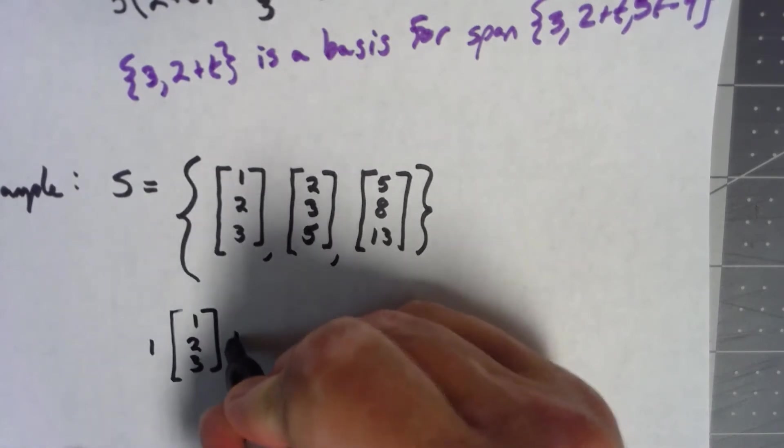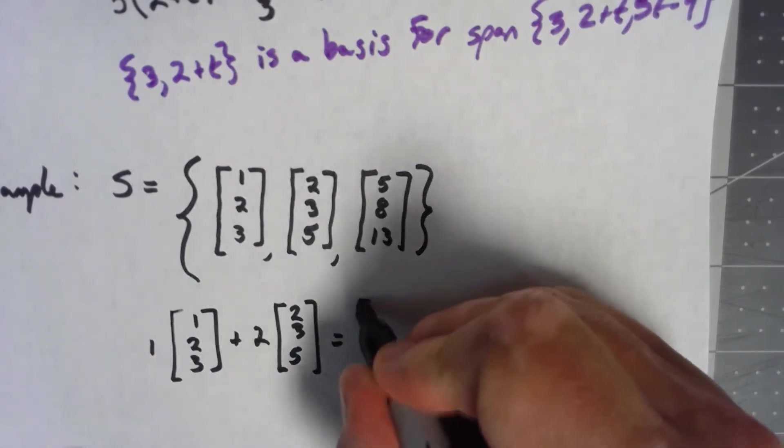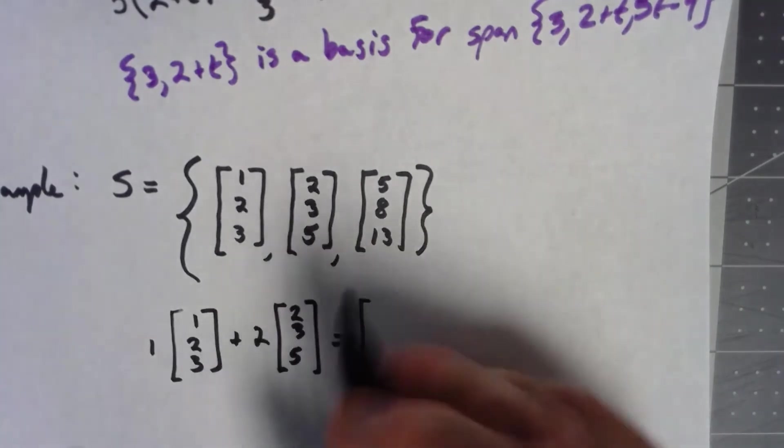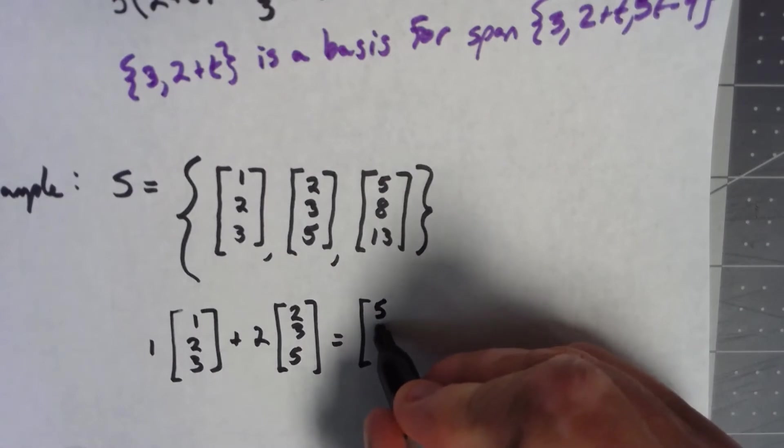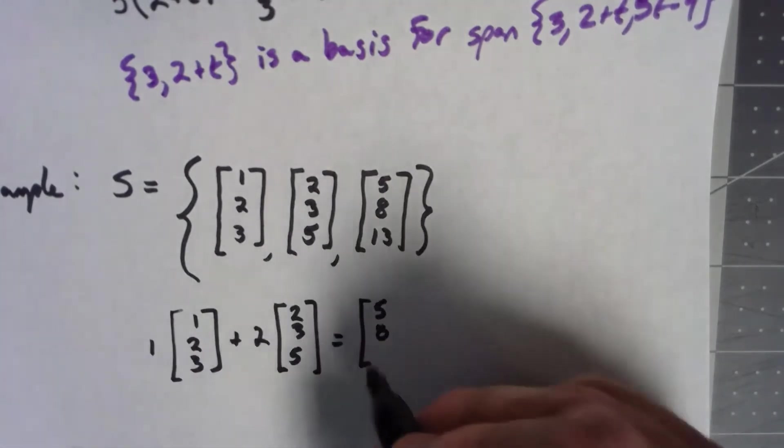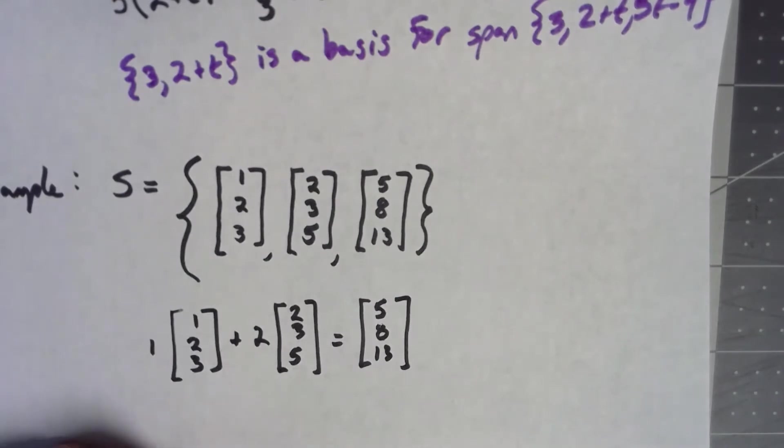If I do 1 times (1, 2, 3) plus 2 times (2, 3, 5): 1 plus 4 gives me 5, 2 plus 6 gives me 8, 3 plus 10 gives me 13. So this third vector is a linear combination of the first two.